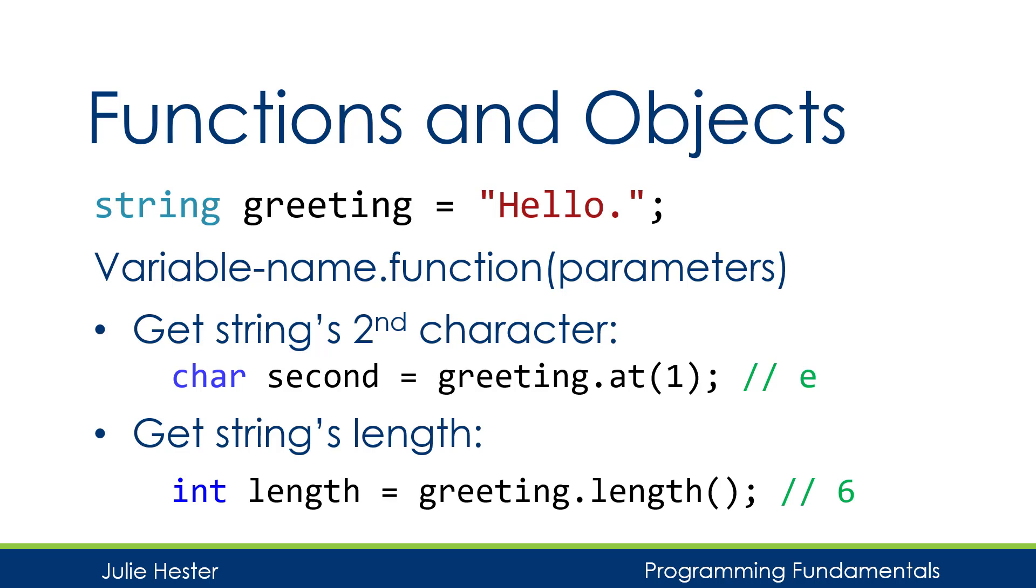Another common example is getting the length of a string. The length function doesn't have a parameter, so we're just going to use empty parentheses. Greeting dot length with no parameters. It's going to look at the data internally to that object, see that there are six characters, and it's going to assign the number six to the integer variable length.